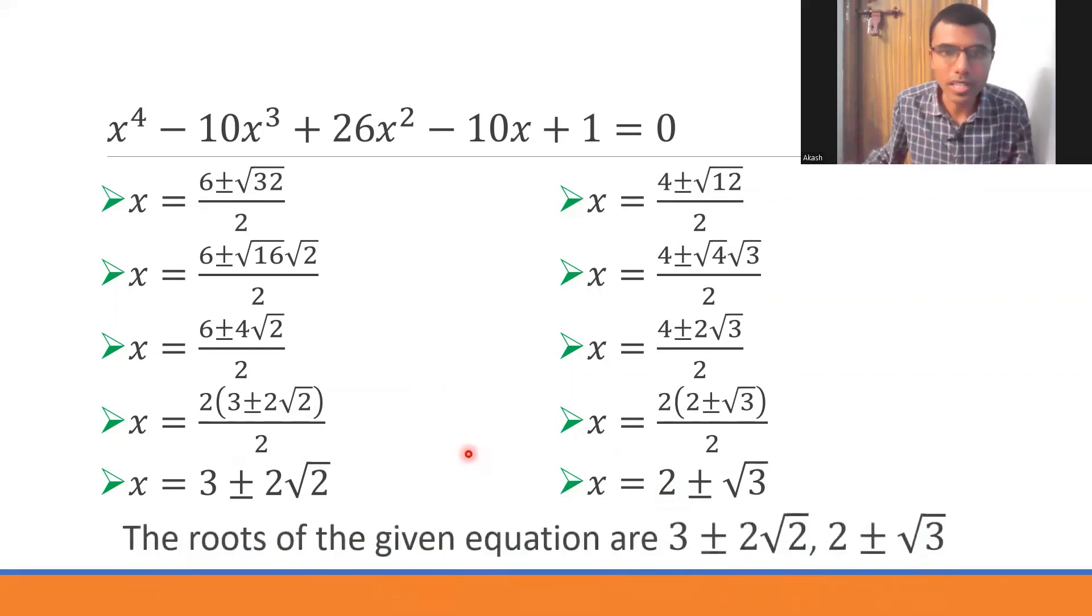The roots of the given equation are 3 ± 2√2 and 2 ± √3. The statement is important. This carries some marks. It's better to write why unnecessarily give a chance for the examiner to cut down your marks.